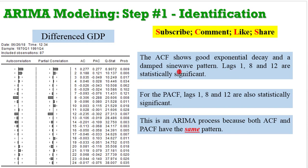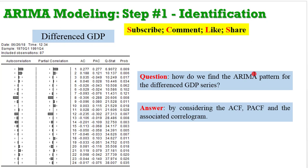For the differenced series, the ACF shows good exponential decay and a damped sine wave pattern — lags 1, 8, and 12 are statistically significant — and the same applies for the PACF. So this is an ARIMA process because the ACF and PACF have the same pattern. The question is how do we find the ARIMA specification for the differenced GDP series — is it ARMA(1,1) or ARMA(1,2)?